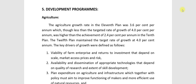The agriculture growth rate in the 11th plan was 3.6 percent per annum, though less than the targeted rate of 4 percent per annum. It was higher than the achievement of 2.4 percent per annum in the 10th plan. So in the 11th plan, we achieved 3.6 percent, which was better than the 10th plan's 2.4 percent.